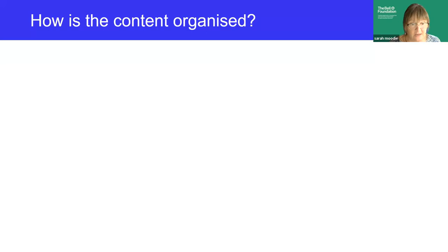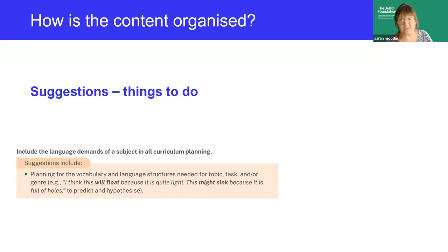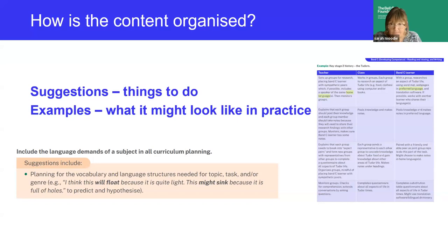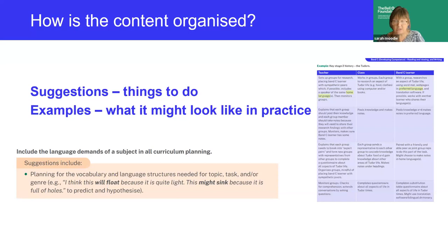As well as activity suggestions, there are also examples of what those might look like in practice, found in grid form at the end of each section. Please note these are not intended to be lesson plans — they're snapshots of how a fictional learner working at a certain key stage and proficiency band might be included in a particular lesson. There are examples from two key stages at the end of every section, set out in table form with what the teacher is doing, what the class is doing and what the learner is doing, covering a range of different topics and curriculum subject areas.